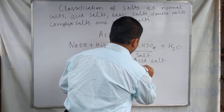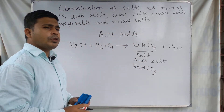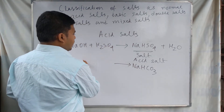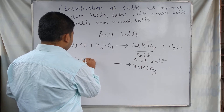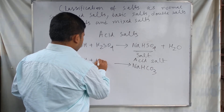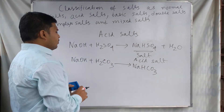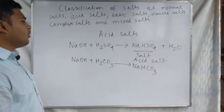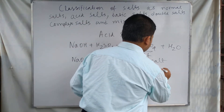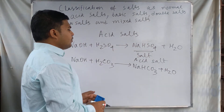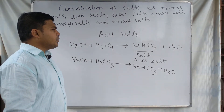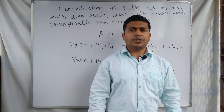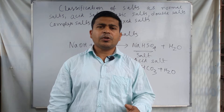Other examples include sodium hydrogen carbonate, NaHCO3, which is also an example of acid salts. It is formed when sodium hydroxide and carbonic acid H2CO3 react together, forming sodium hydrogen carbonate and water. Sodium hydrogen carbonate is an example of an acid salt or acidic salt. Acidic salts are salts that are formed by the partial replacement of the hydrogen atom of the acid.